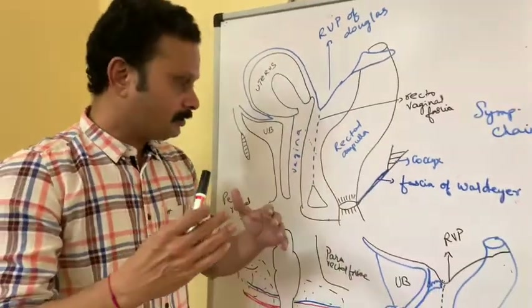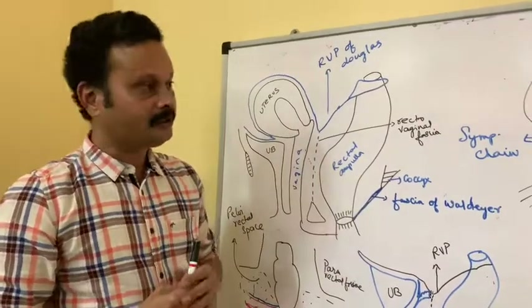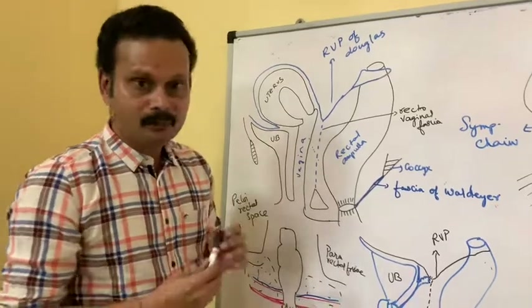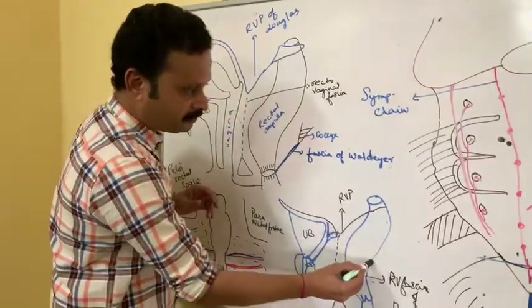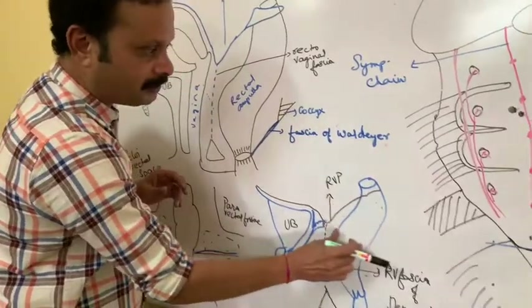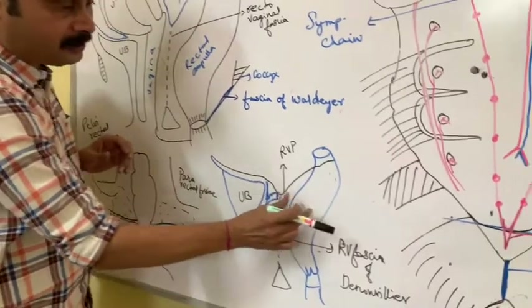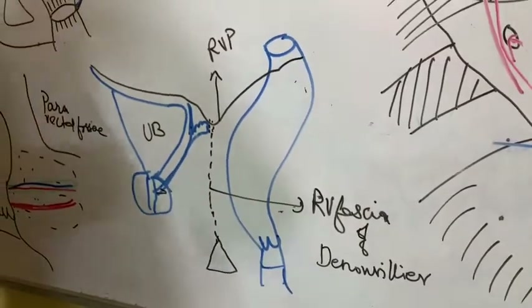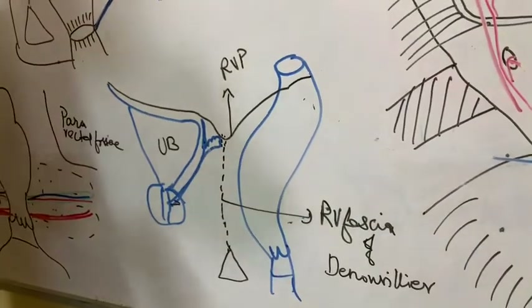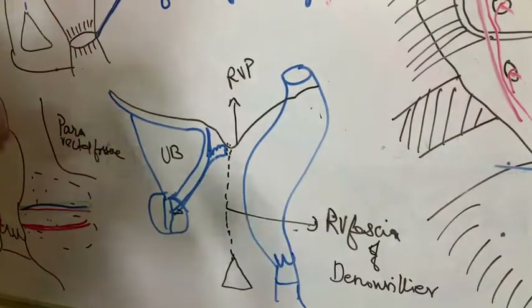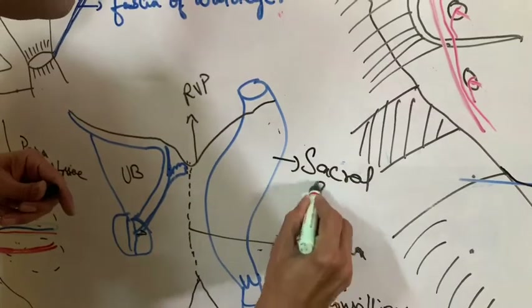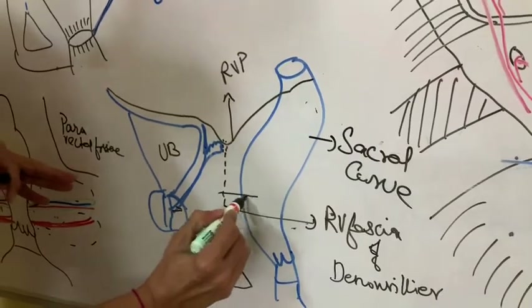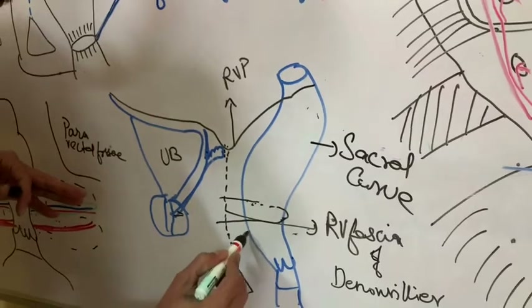In relation to the anteroposterior curvatures, the upper half is called the sacral curve, which is convex posteriorly. In the lower part, it is convex anteriorly, bent forwards by the puborectal sling of levator ani muscle, and this is called the perineal curve. To repeat: the anteroposterior curvatures of the rectum are the upper half — the sacral curve — and the lower half — the perineal curve.